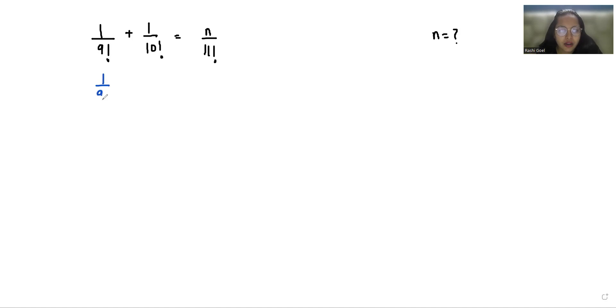So 1/9! + 1/10! we can write as 1/9! + 1/(10×9!) = n/(11×10×9!).